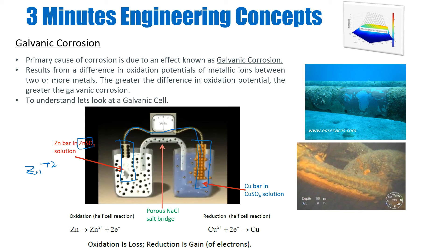The copper ions are deposited as copper atoms onto the copper electrode bar. Due to the imbalance — the zinc side losing positive ions and the copper side accumulating them — the salt bridge supplies the deficiency of ions to maintain equilibrium. After a certain amount of time, the zinc electrode will be completely dissociated and corroded. That is a typical galvanic cell.